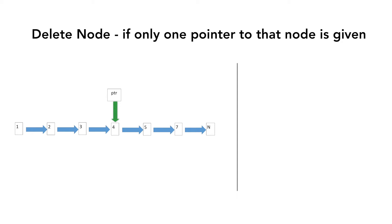We cannot directly delete the node using pointer ptr as we don't have access to its previous node, but we have access to all the nodes after it — that is node 5 and node 7 — which we can access by traversing through pointer ptr. So instead of deleting the node pointed by ptr, we will delete its next node containing value 5. But before deleting it, we copy its data value into the node pointed by ptr, giving us two nodes with value 5. Then we delete that next node and adjust our links.